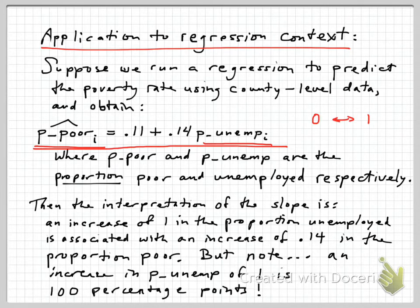Now, the interpretation of this slope is that an increase of one unit in the proportion unemployed is associated with an increase of 0.14, that's the slope, in the proportion poor. But note, this is really a quite dramatic increase in the proportion unemployed, because an increase of one would be a 100 percentage point increase. So that's quite striking. So the question is, is there maybe a better way to interpret this regression that's going to think about a change in unemployment that's maybe a little more realistic than a 100 percentage point change?